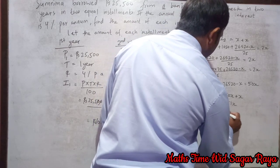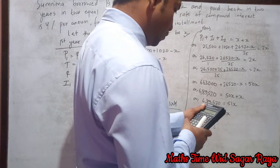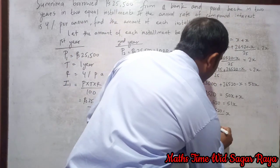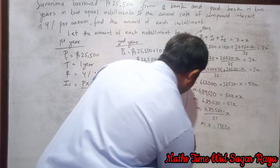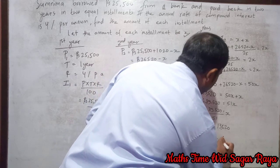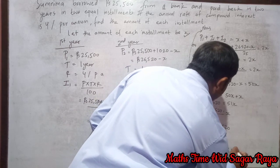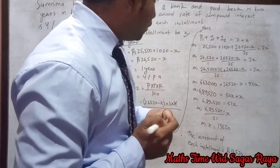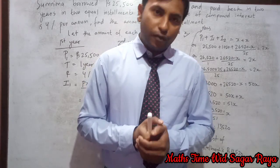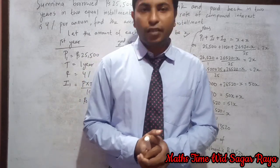Dividing both sides by 51: x = 689520 / 51 = 13520. So the amount of each installment is rupees 13520. If you really like my video, please like, share and subscribe to my channel. If you are watching this video for the first time, don't forget to press the bell icon so you won't miss any upcoming videos. See you in the next video, thank you.